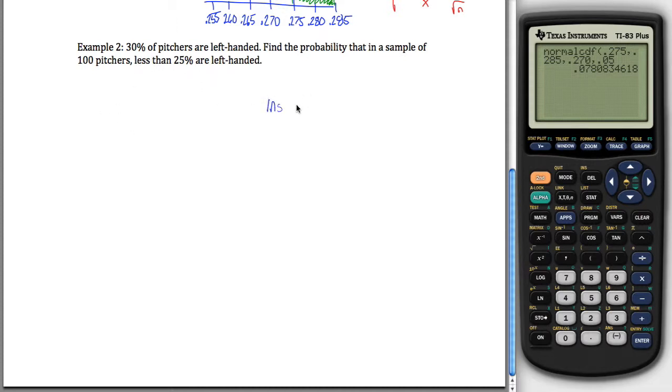So, a few things. Instead of mu, instead of mu, we use P, and this is the population proportion. Let's see, some other things that we need to know.